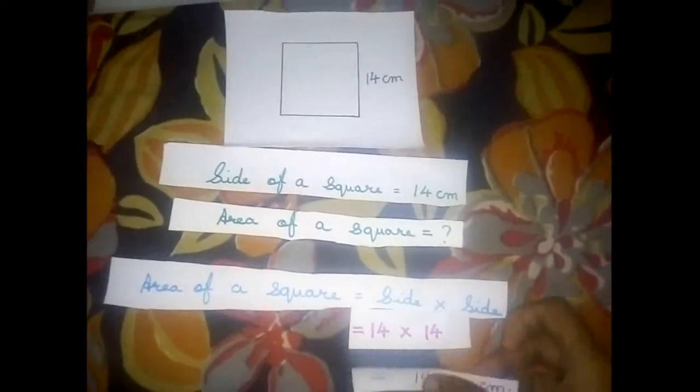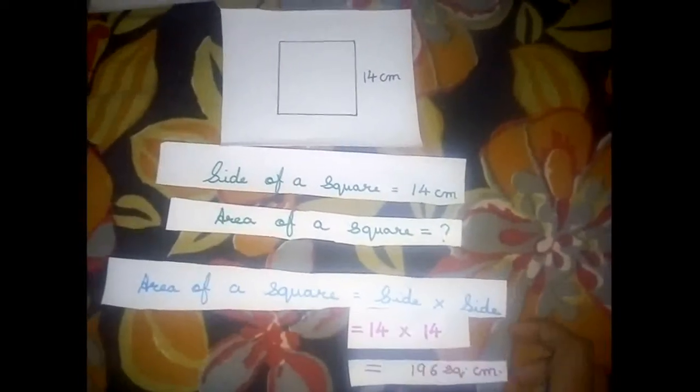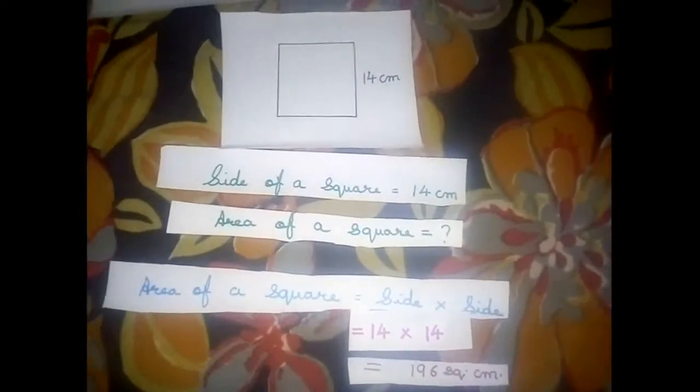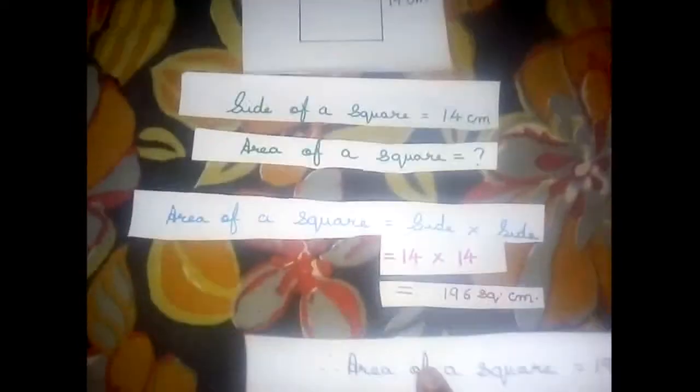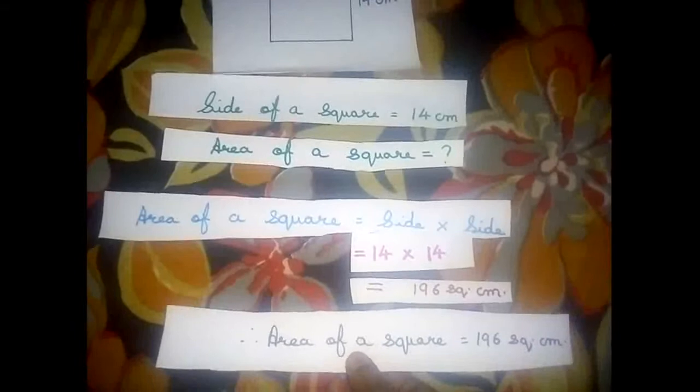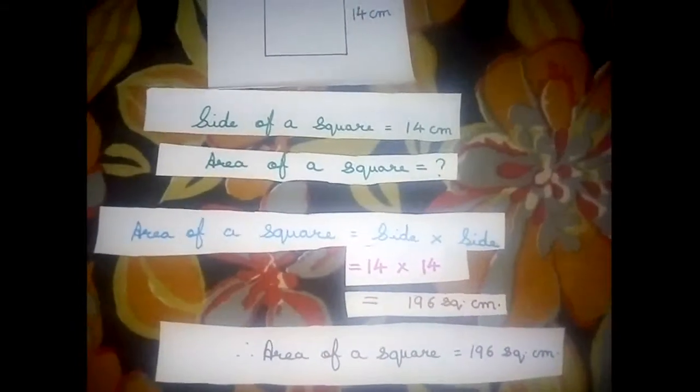That is equal to 196 square centimeter. Therefore, area of a square is equal to 196 square centimeter.